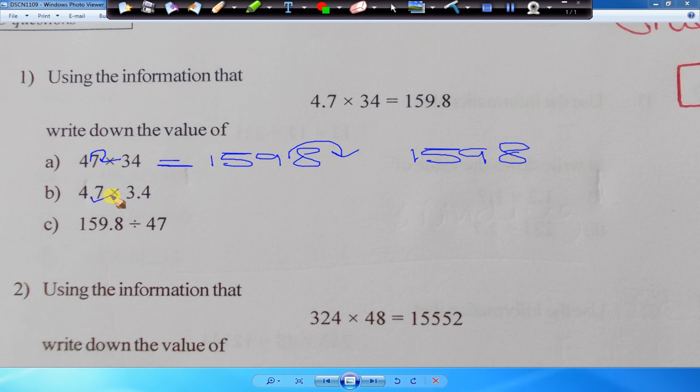4.7 stays the same. 34 becomes ten times smaller. If we make the question ten times smaller, we must make the answer also ten times smaller. In the multiplication configuration, that goes that way and that's the answer that Hassan gave me earlier, which was correct.